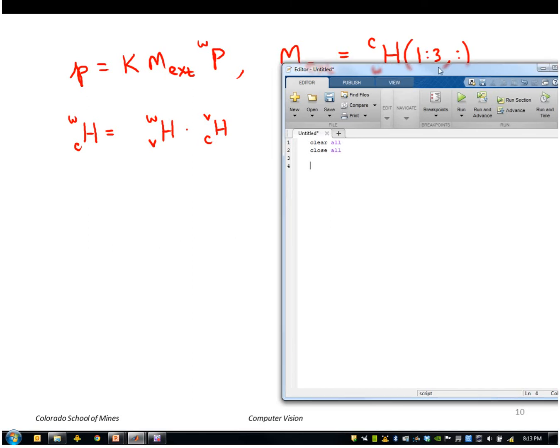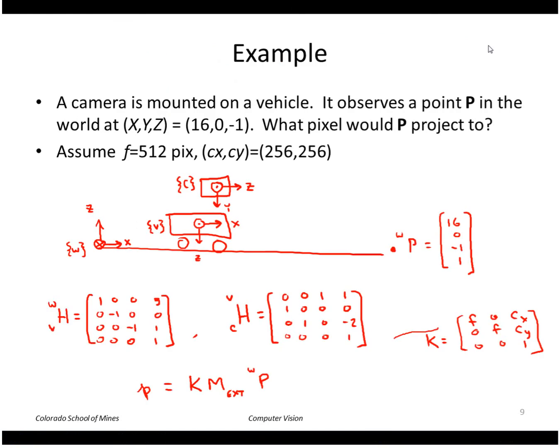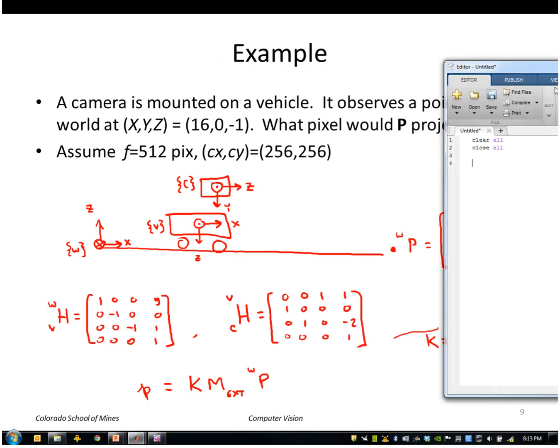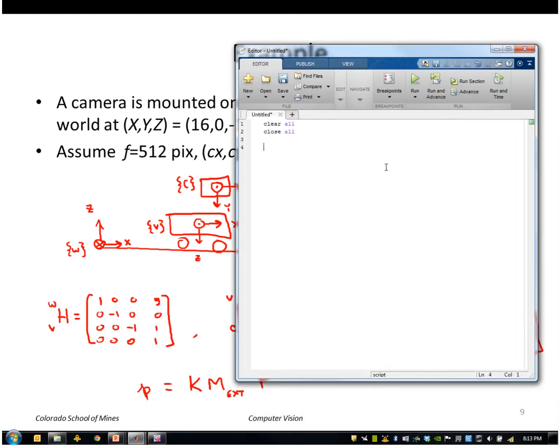So looking at my assumed transforms from before, I had the rotation matrix from vehicle to world. I'm going to write it like this: it was 1, 0, 0, 5, 0, 0, minus 1, 0, 0, 0, minus 1, 1. And then I put 0, 0, 0, 1 at the last row.